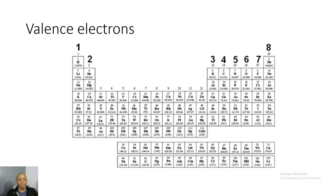Now let's look at valence electrons. Here's a chart showing how many valence electrons elements have in each group or column. The elements in the alkali metals column all have one valence electron. In the second column, the alkaline earth metals, all have two valence electrons. And over in the nitrogen family, all elements have five valence electrons.